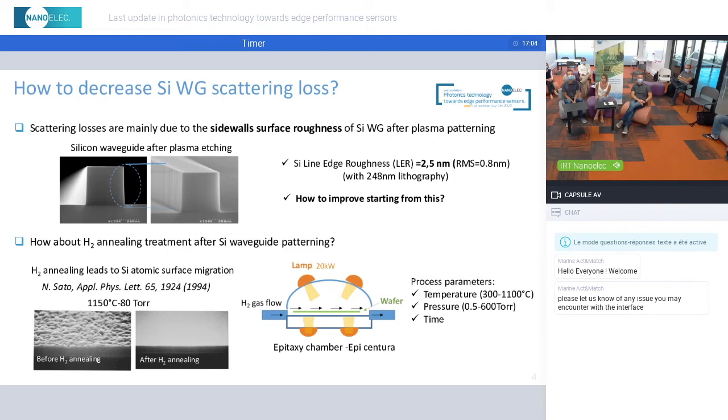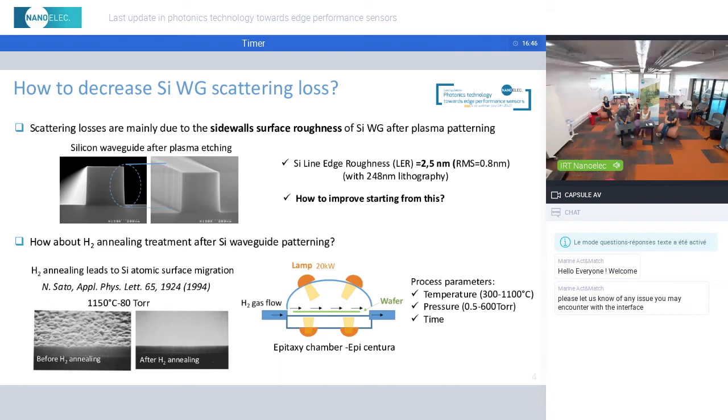The experiments were performed in an epitaxy chamber in which a high flow of hydrogen circulates. The pressure in the chamber is maintained in the Torr range, and the wafer can be heated by several lamps, allowing to reach temperatures as high as 1,100 degrees Celsius.